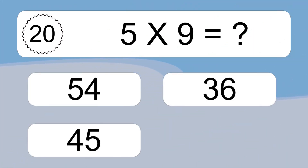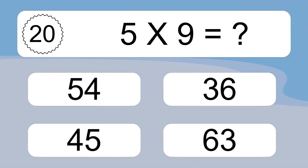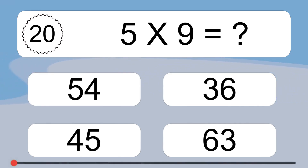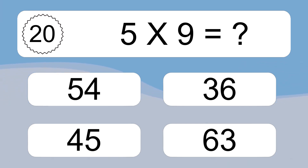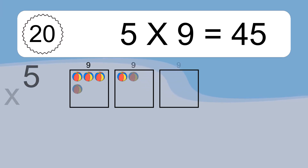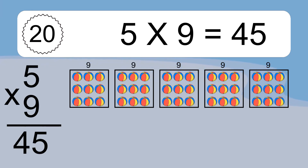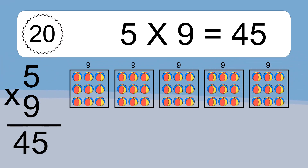Five times nine equals what? Five times nine equals forty-five. We have five boxes and each box has nine colorful balls inside. If you count all the balls in all the boxes together, you will have five times nine balls. This equals forty-five balls.